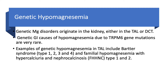Examples of genetic hypomagnesemia in the thick ascending limb include Bartter syndrome — there are several types: 1, 2, 3, and 4. There is also a disorder that is not common but important to know, especially for the pediatric nephrologist or pediatrician. It is called familial hypomagnesemia with hypercalciuria and nephrocalcinosis, and it comes in two types: type 1 and type 2.